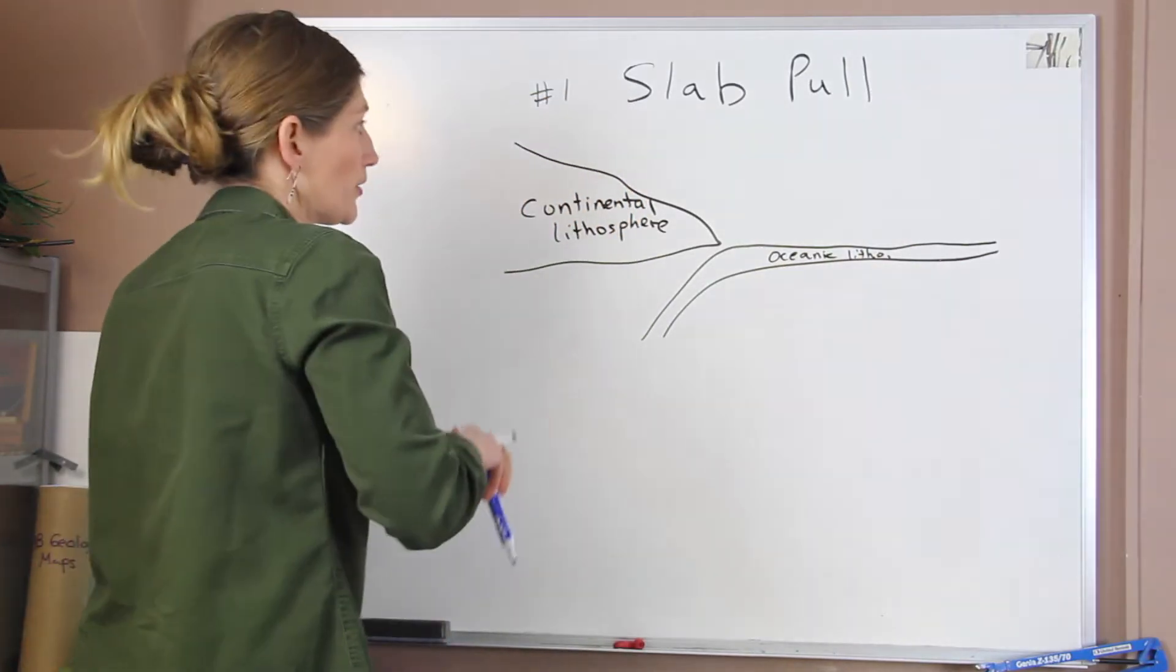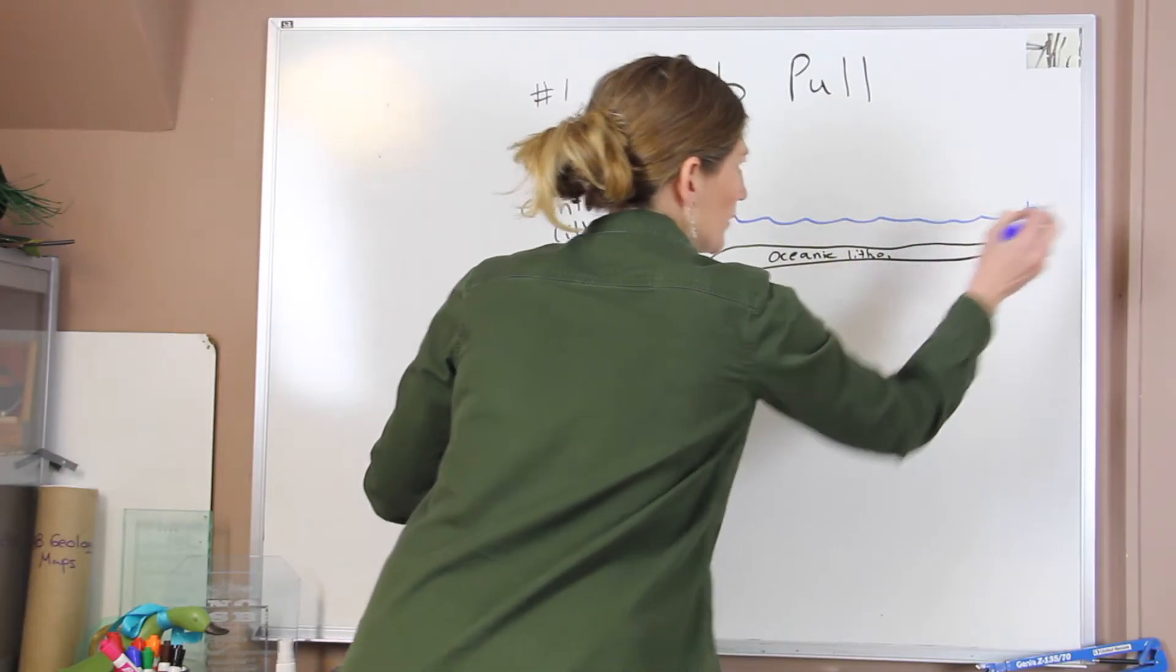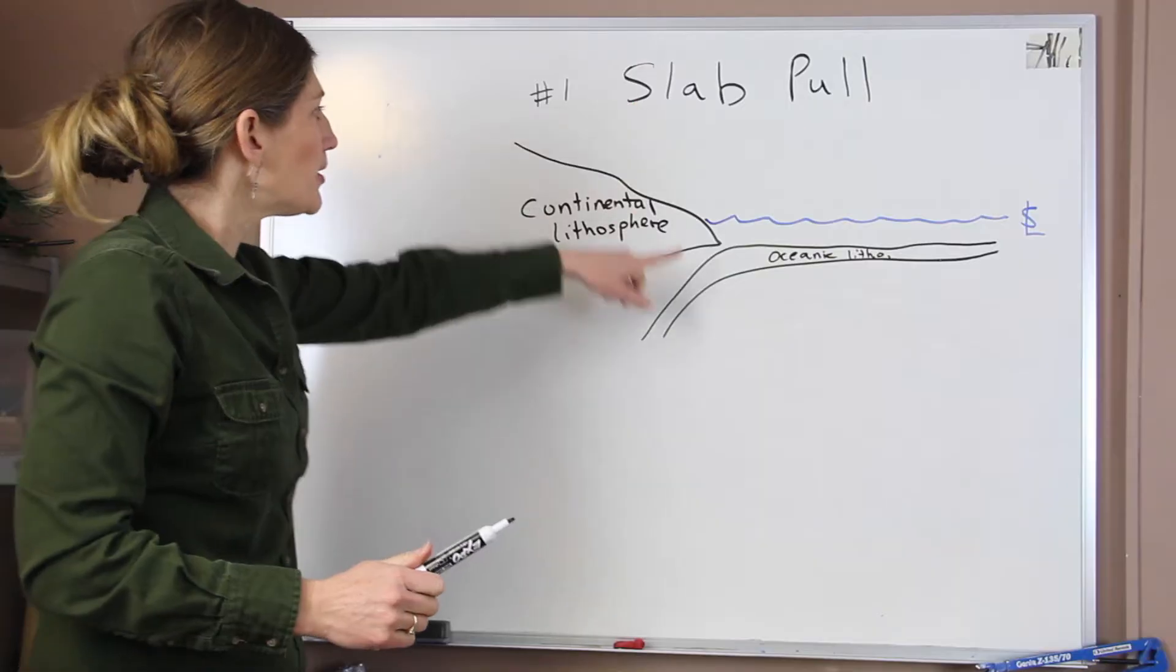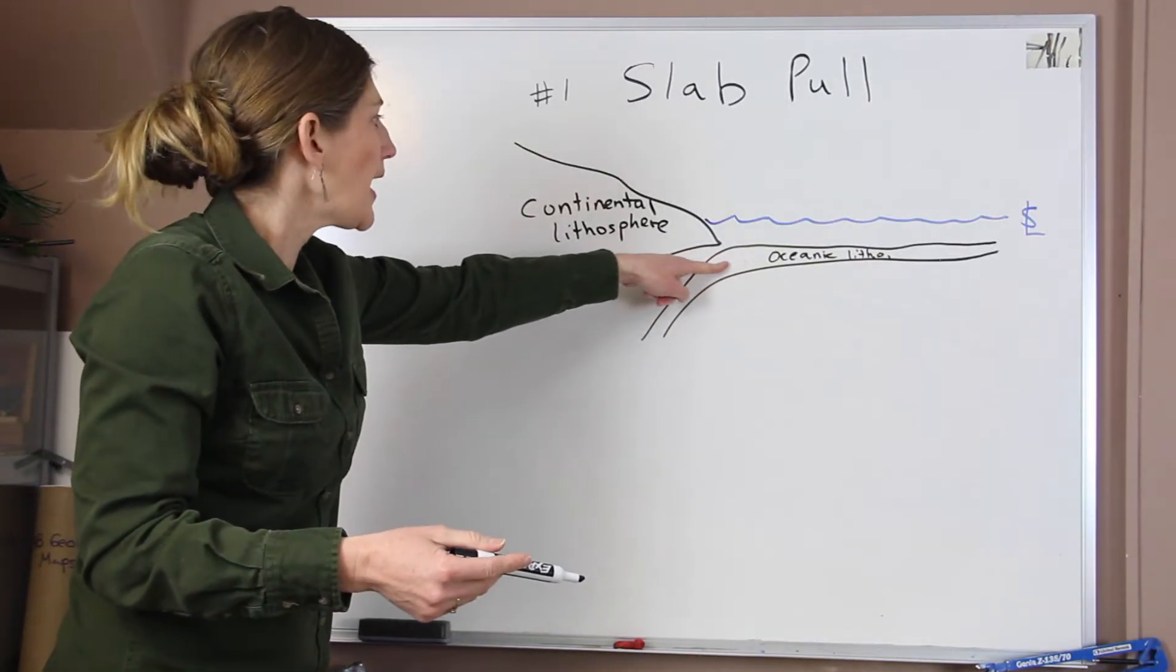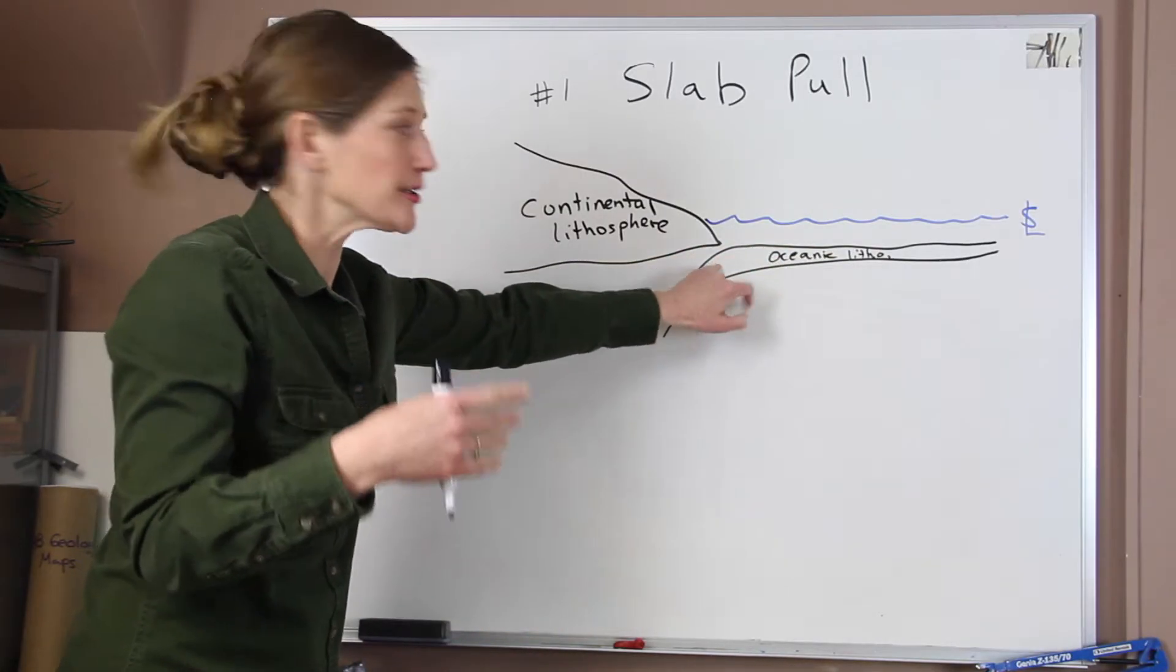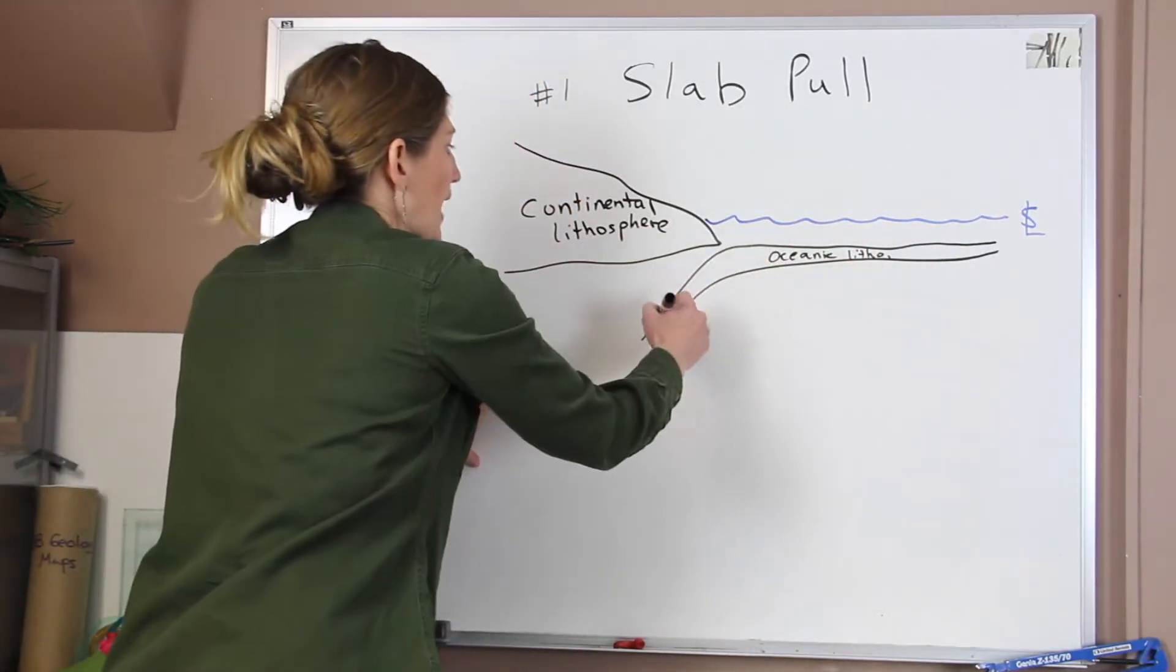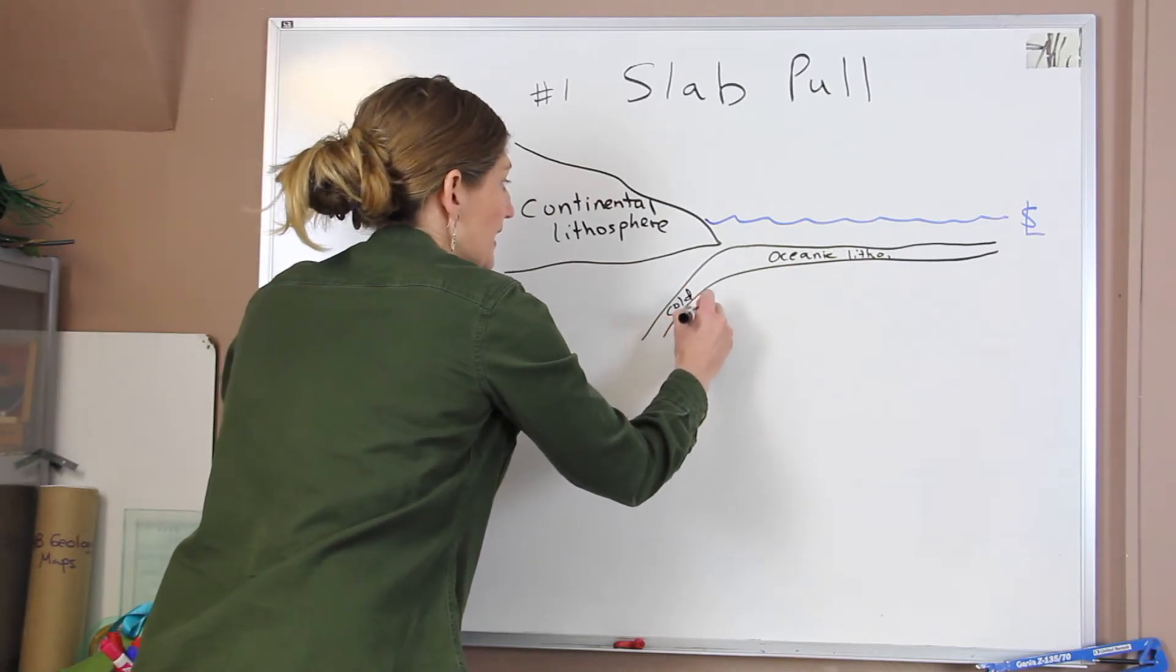Okay, and it is an oceanic plate. So here, we'll put some water for sea level. So what the idea of slab pull is that this oceanic plate, which is already denser, as it goes down, this plate is old. So the older lithosphere is cooler and denser than the younger lithosphere that we see out at our mid-oceanic ridges. So as this comes down, it's cold and it's dense.